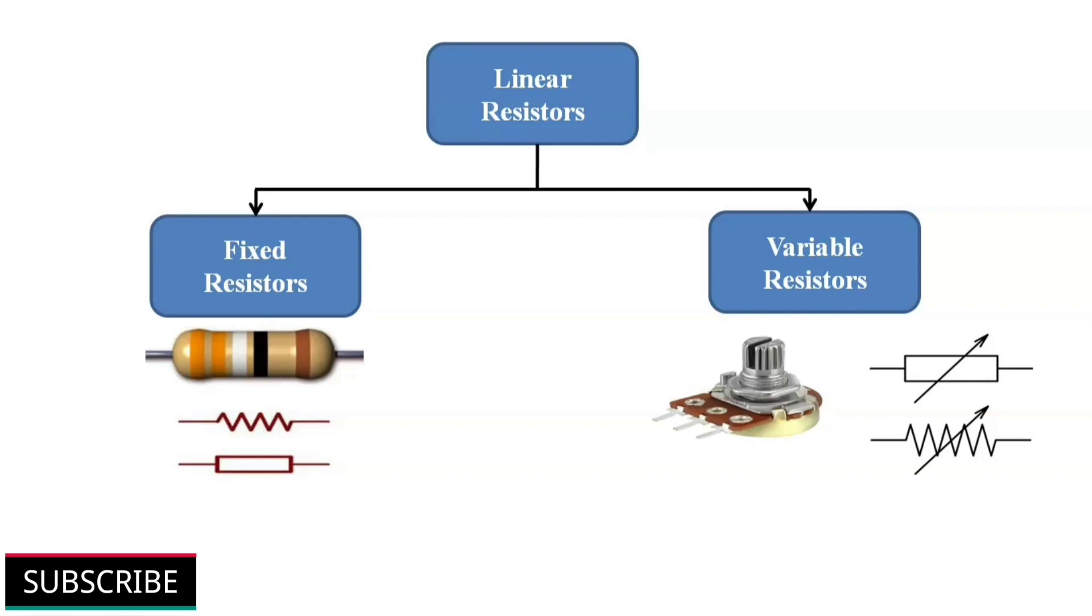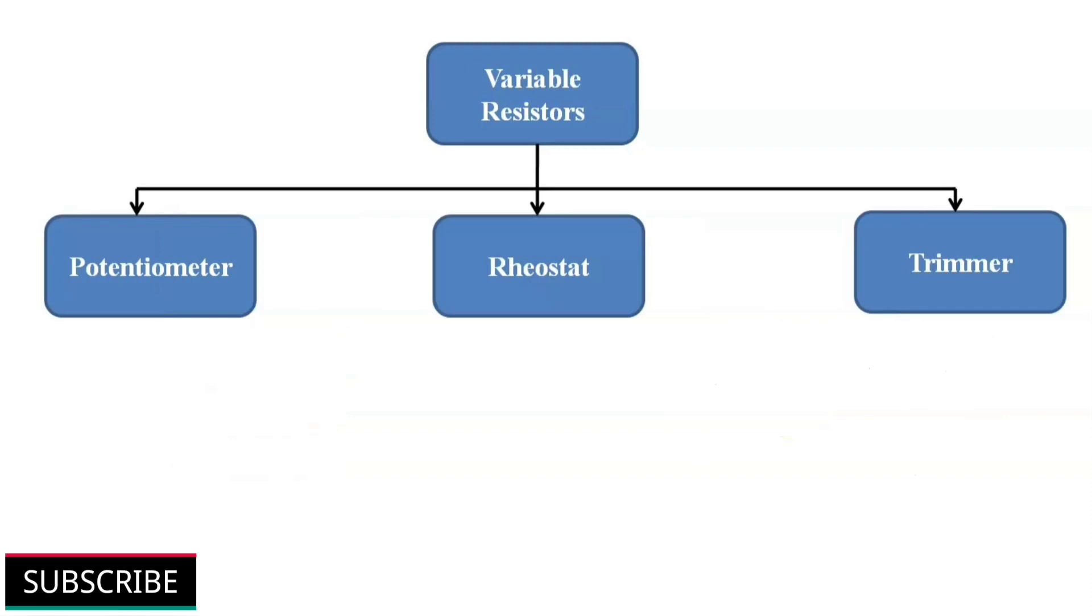Variable resistors, as the name indicates, we can vary the resistance values manually according to the requirements with the help of knob or shaft connected to them. Variable resistors are further divided into potentiometers, rheostats and trimmers.